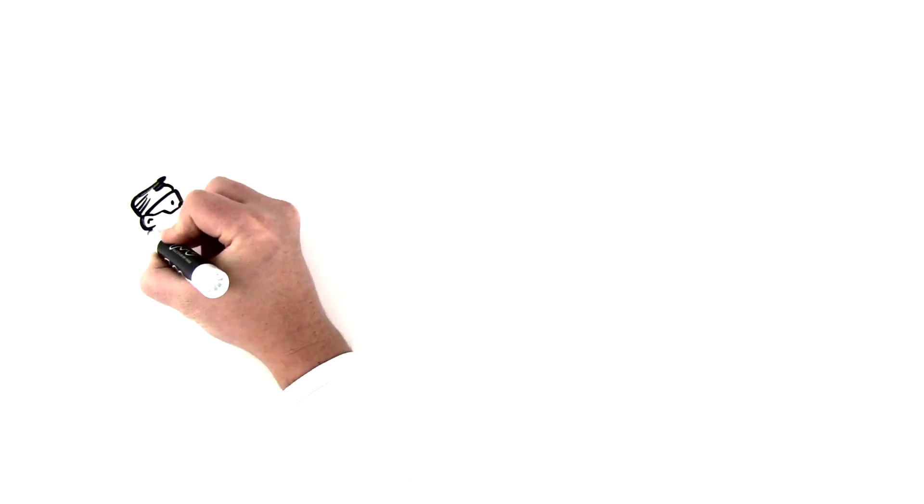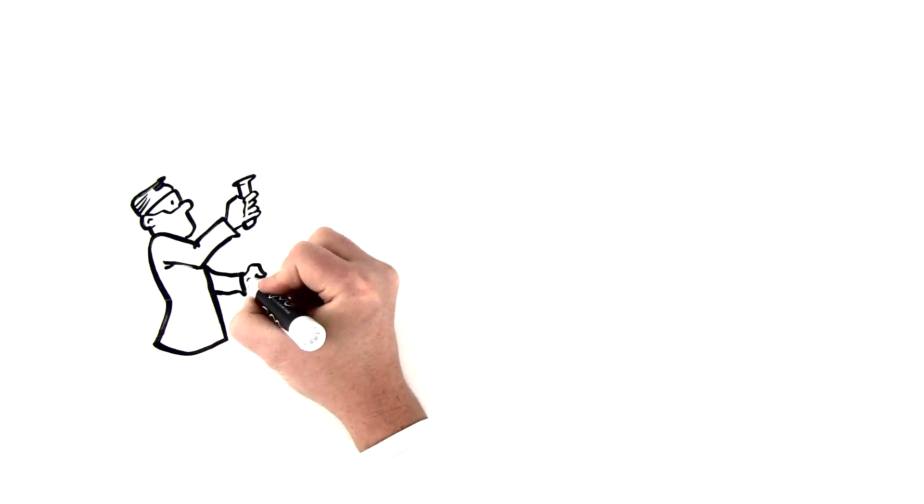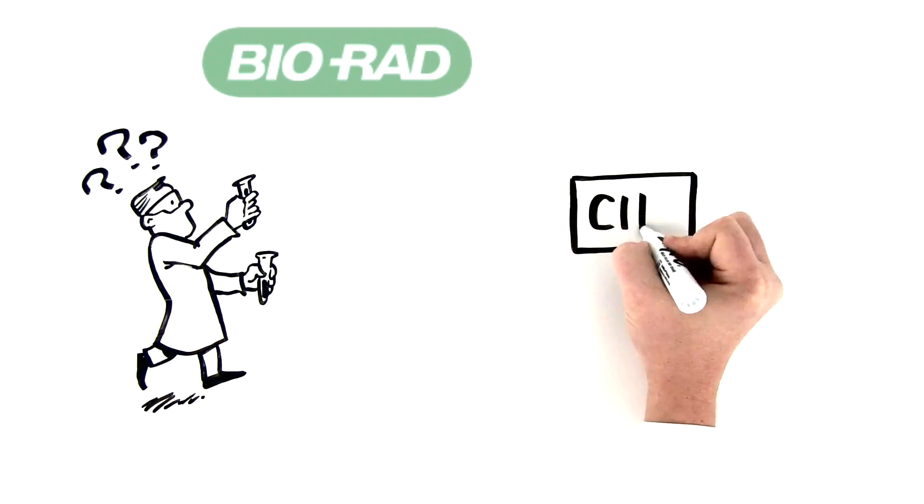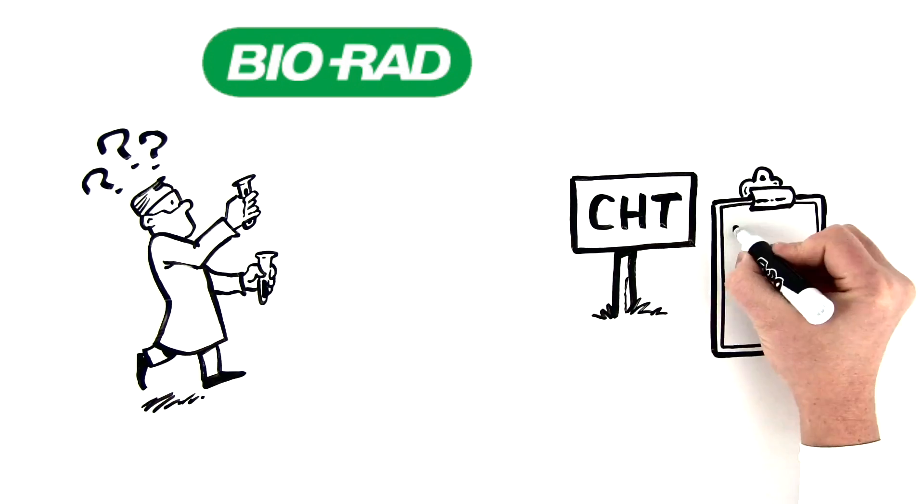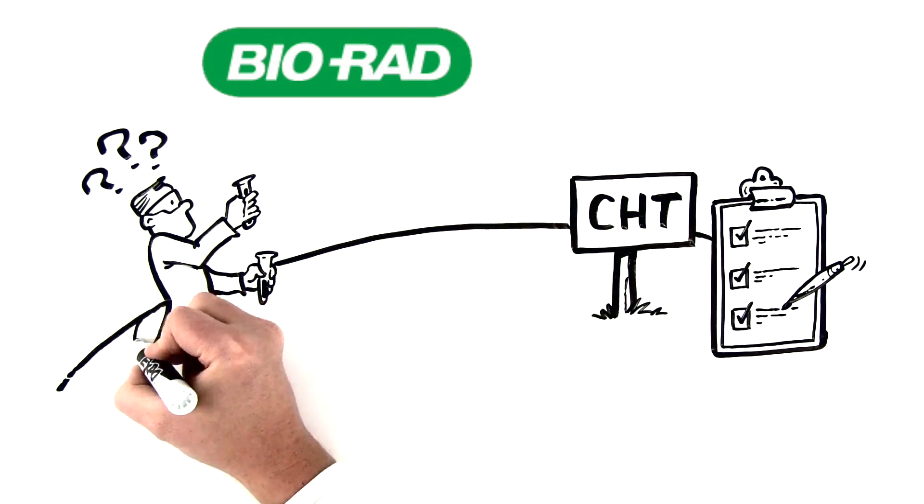Why spend time experimenting to find the right selectivity when you can just use CHT? CHT has a proven track record of significantly reducing the full range of impurities in a single step. So why take the long road?